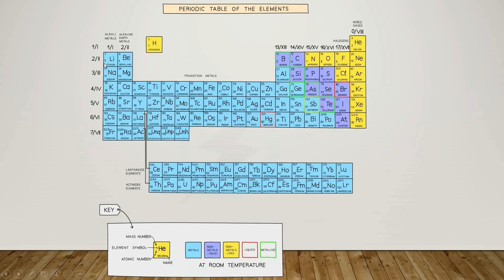And if you see the elements arranged in rows, for example: lithium, beryllium, boron, carbon, nitrogen, oxygen, fluorine, neon — you will see these are arranged in rows called periods.